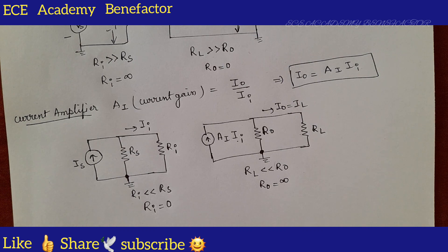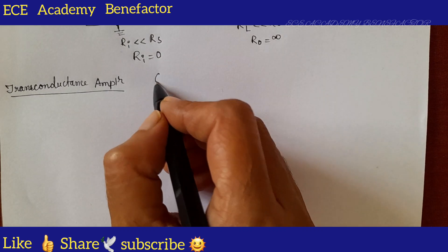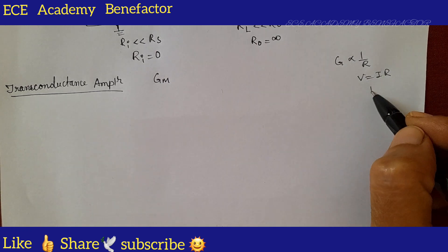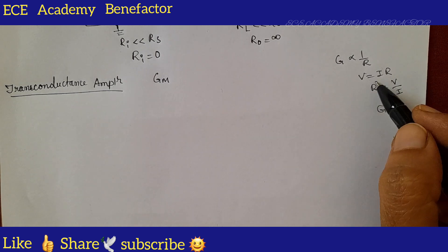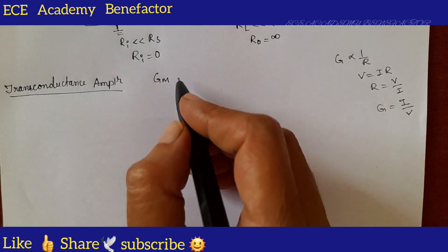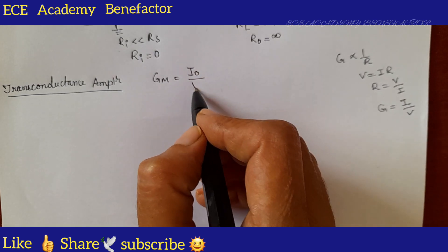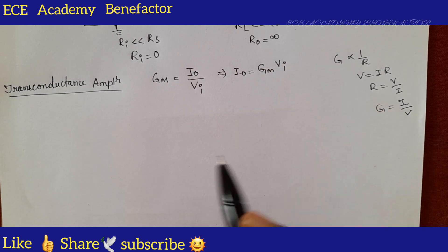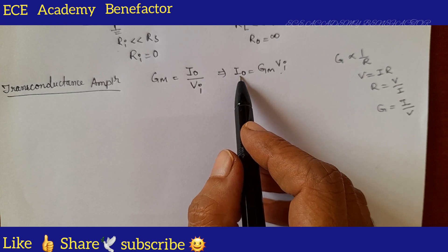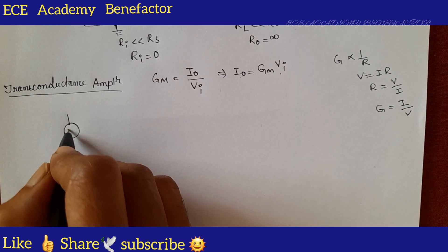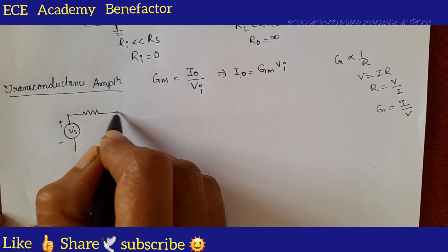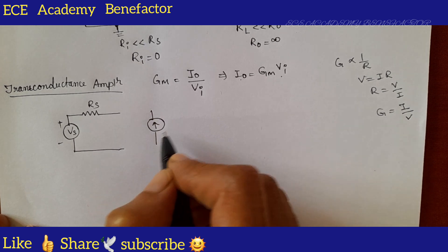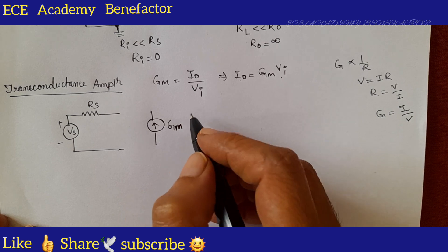The third amplifier is the transconductance amplifier with gain Gm. Gm is the reciprocal of resistance — since R = V/I by Ohm's law, G = I/V. So Gm = Io/Vi, meaning output current divided by input voltage. Therefore Io equals Gm times Vi. At the input side we place a voltage source Vs with series resistor Rs, and at the output side a current source of value Gm·Vi.